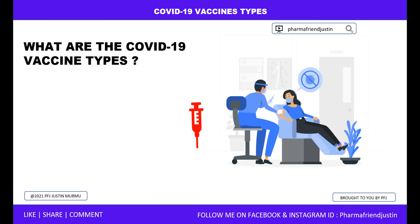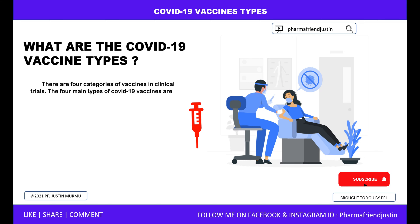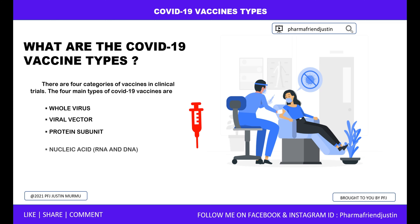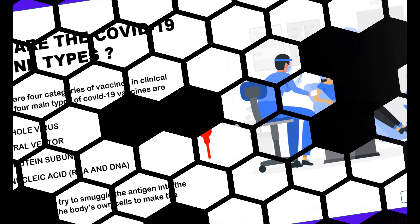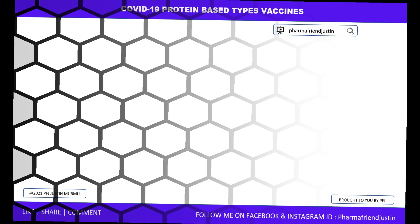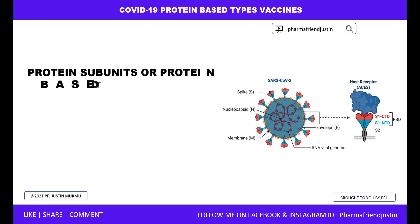What are the COVID-19 vaccine types? There are four categories of vaccines in clinical trials. The four main types of COVID-19 vaccines are whole virus, viral vector, protein subunit, and nucleic acid — RNA and DNA. Some of them try to smuggle the antigen into the body, while others use the body's own cells to make the viral antigen.